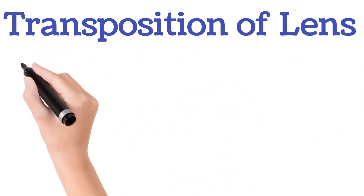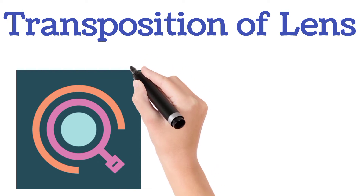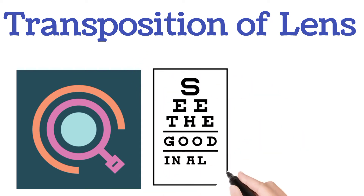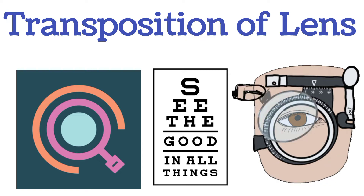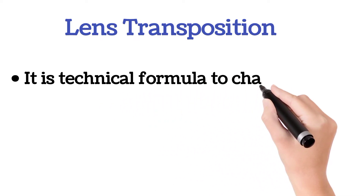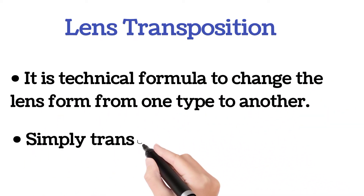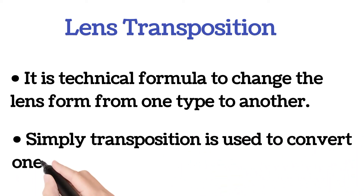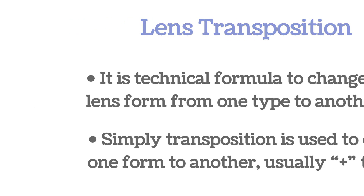Hello friend, you are watching Optometry Fans YouTube channel. Today we are covering a very important and useful topic: transposition of the lens. Transposition is a technical formula used to change the lens power from one form to another. Simply put, transposition is used to convert one form to another — usually plus form to minus form.